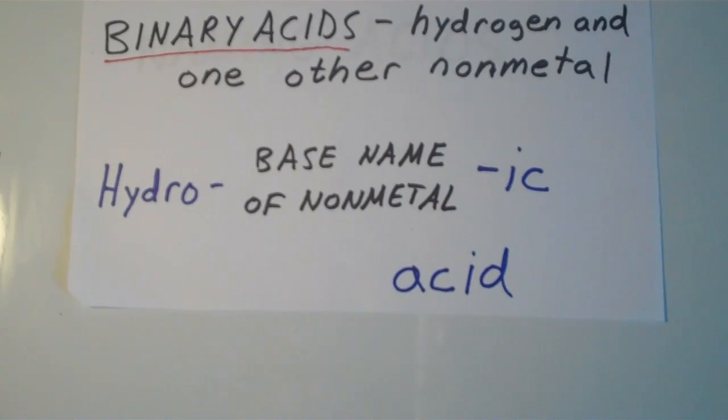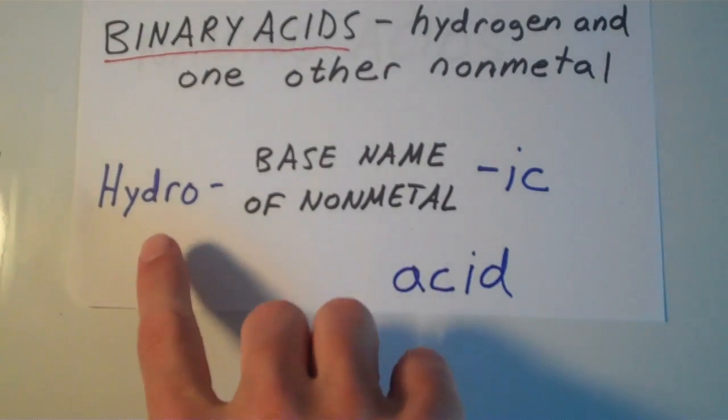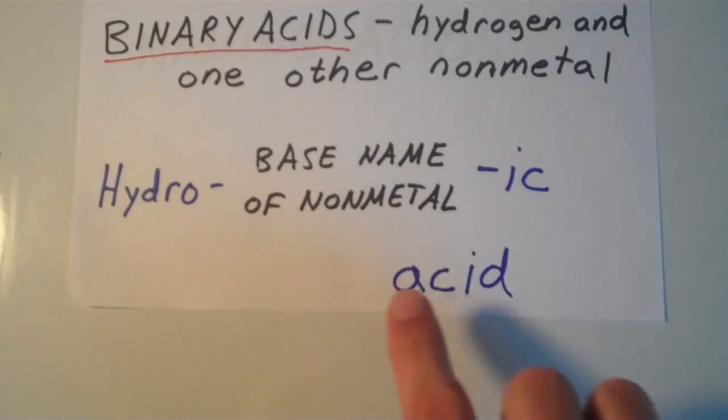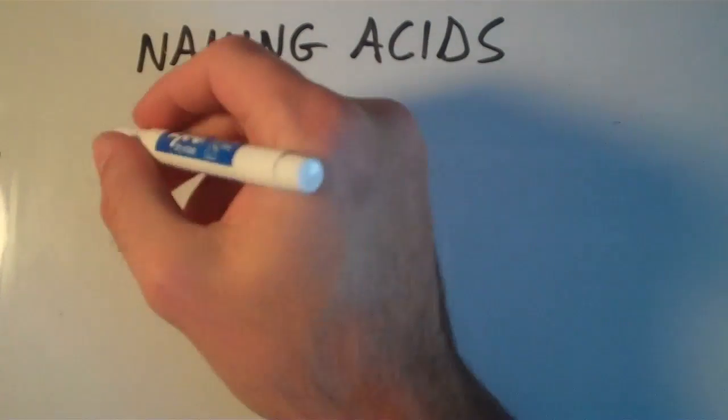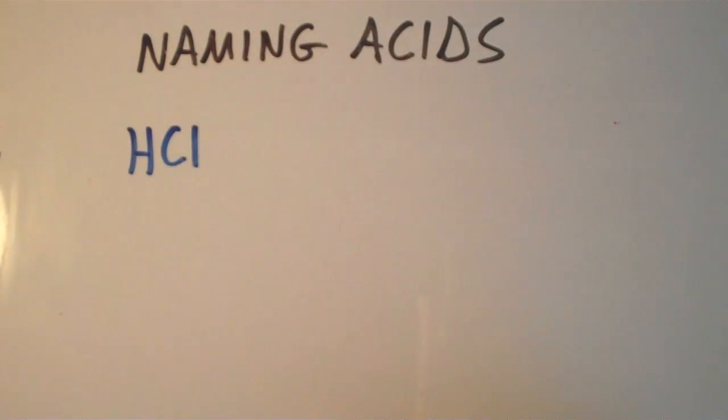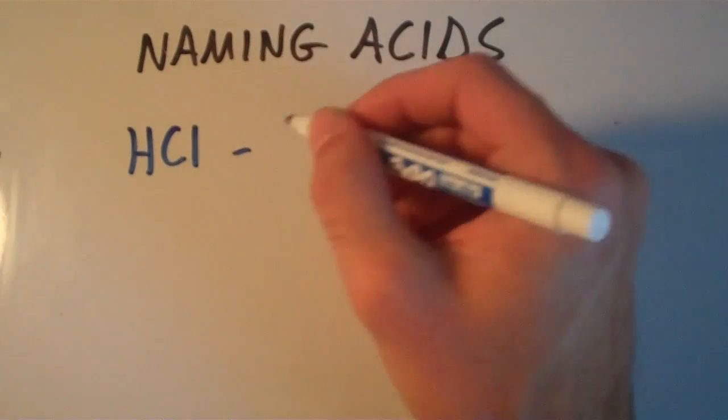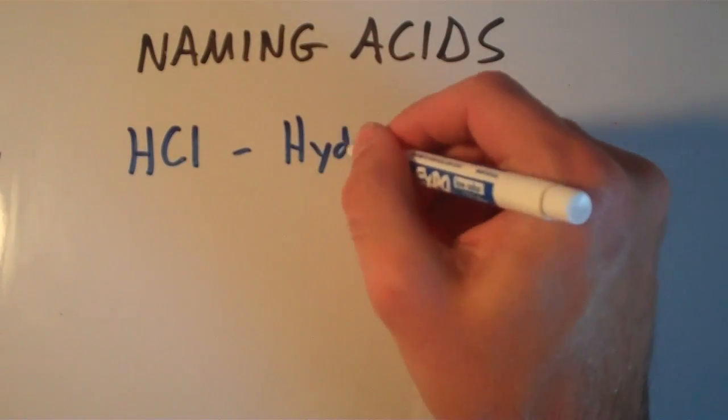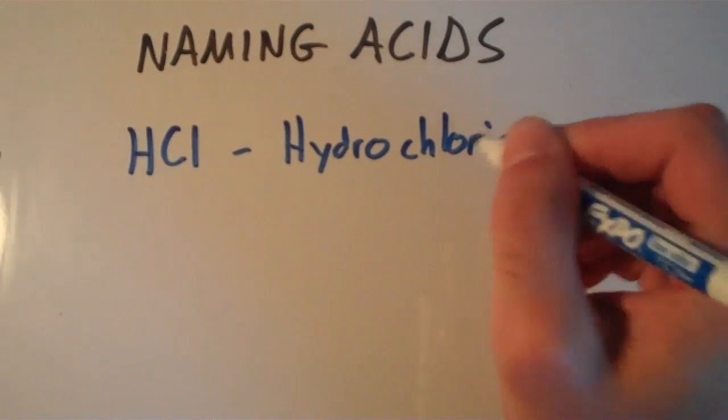So to name a binary acid, we take the base name of that other nonmetal that's not hydrogen, and we attach the prefix hydro and the suffix -ic, plus we tack on the word acid. So HCl, this is a binary acid. It has hydrogen and one other nonmetal. So this would be hydrochloric acid.